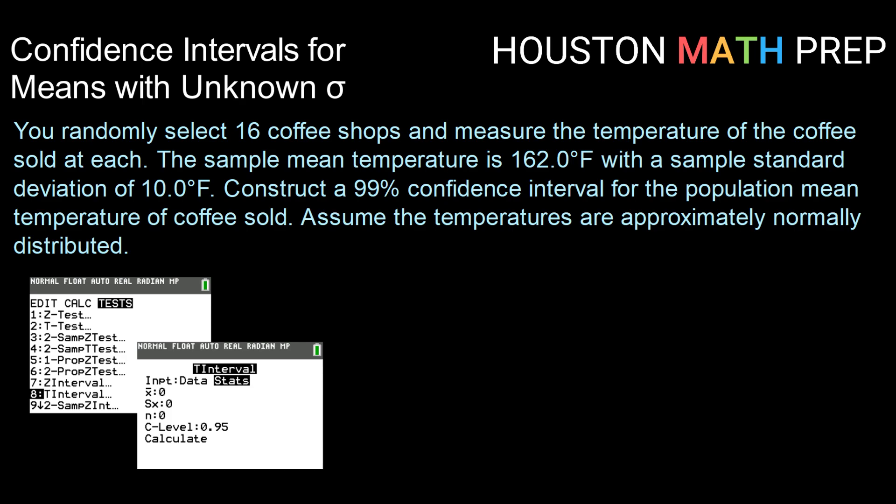Because here we are given a sample standard deviation of 10 rather than a population standard deviation, we have an unknown sigma. So we would be working with a t interval.